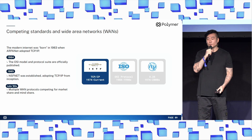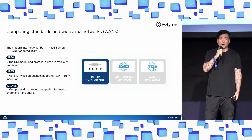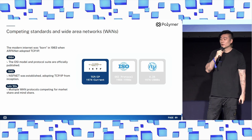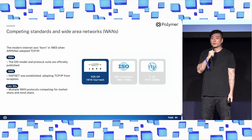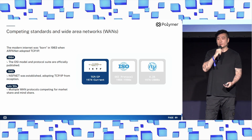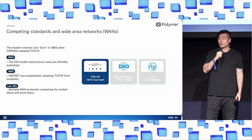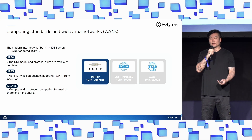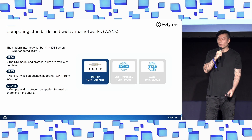The modern internet was born in 83 when ARPANET adopted TCP-IP. In 84, the OSI model and protocol suite were officially published. In 85, NSFNET adopted TCP-IP from inception. And by the late 80s, TCP-IP saw growing market share at roughly 70 to 80% adoption. X.25 came in second at 10 to 15% adoption. While the OSI protocol did not see meaningful practical adoption, it was influential in its conceptual and theoretical contributions. In fact, the OSI model today is still used to describe networking architecture.